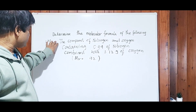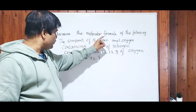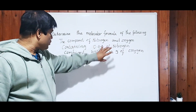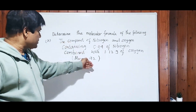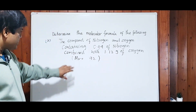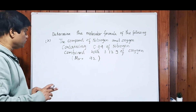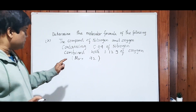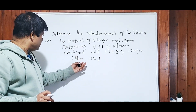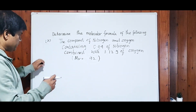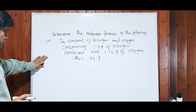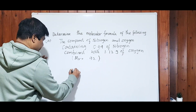Look at this question: determine the molecular formula of a compound of nitrogen and oxygen whose masses are given. This is an OCR question. First, we have to work out the empirical formula since it is not given, and only then can we work out the molecular formula. The masses are given, so start from there.